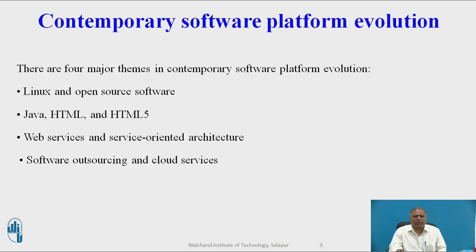Contemporary Software Platform Evolution. There are four major themes in Contemporary Software Platform Evolution. The first one is Linux and Open Source Software, second is Java, HTML and HTML5, third is Web Service and Service Oriented Architecture, and fourth is Software Outsourcing and Cloud Services.